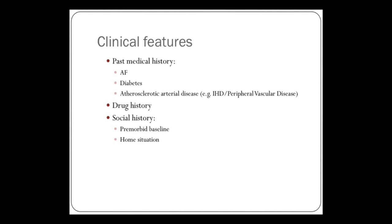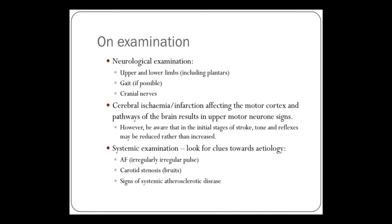A drug history and social history is critical, because as well as the immediate management of the patient, you need to think long term in terms of rehabilitation and the functional deficit the patient has, and how they will be able to cope in their home environment. On examination, if the patient is able to walk, it's helpful to see if they've got any difficulty walking — not only from the neurological perspective, but how will this patient mobilize having had this stroke? Will they need walking aids?